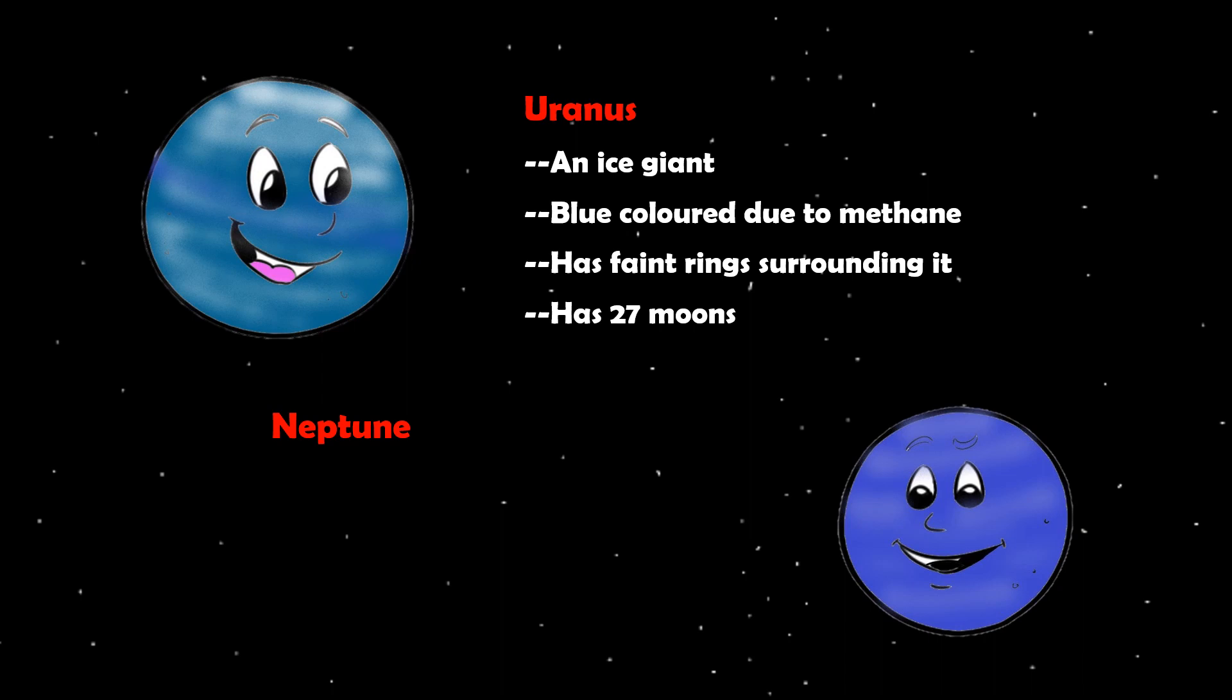Neptune is the farthest planet from the Sun. It is the coldest planet. It is also an ice giant, like Uranus. It has 13 moons.